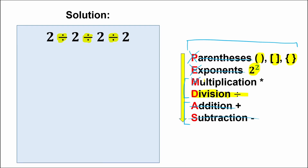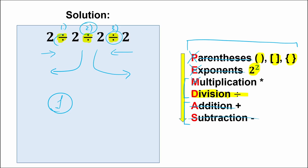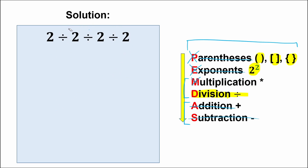According to PEMDAS, we have only division. The key question is: how do we solve it? From right to left, or left to right? We have three division signs — first, second, and third. If we choose different ones first, we get completely different answers. This combination is extremely tricky. PEMDAS tells us: when we have a mixture of multiplication and division, we do it in a strict order from left to right.